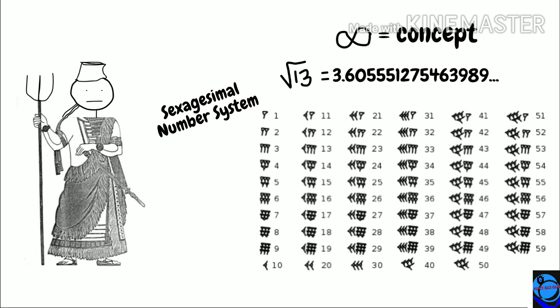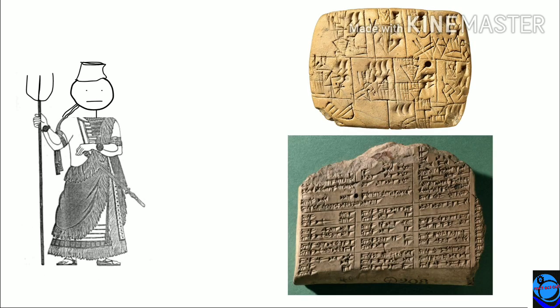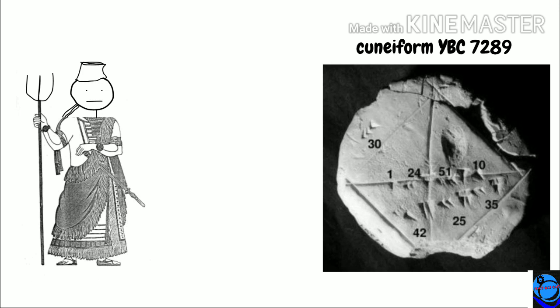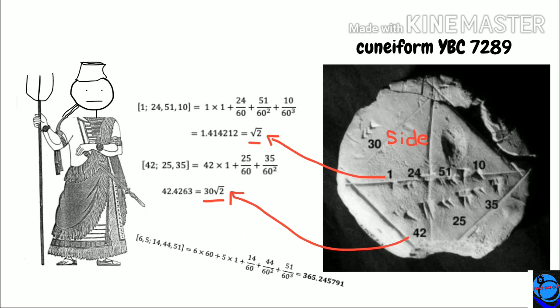A contributing factor was their sexagesimal number system with a base of 60, meaning they represented all real numbers using 60 symbols — different from the base 10 decimal system we use today with digits 0 through 9. Babylonian mathematics was recorded on clay tablets called cuneiforms. A famous cuneiform shows that the diagonal of a square is root 2 times its side. They could also define numbers with potentially infinite precision, like the length of the year or the value of pi.